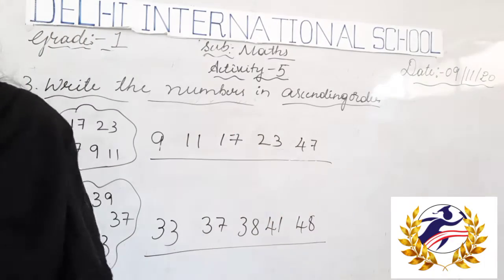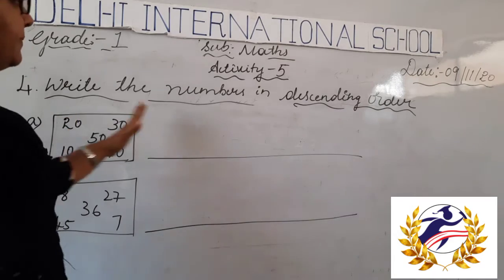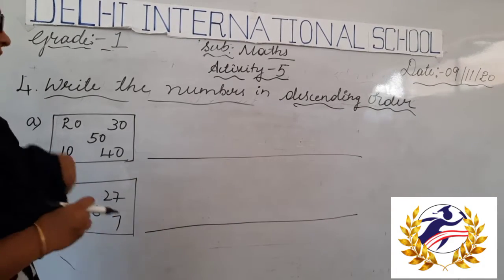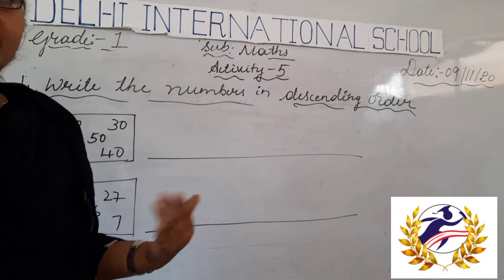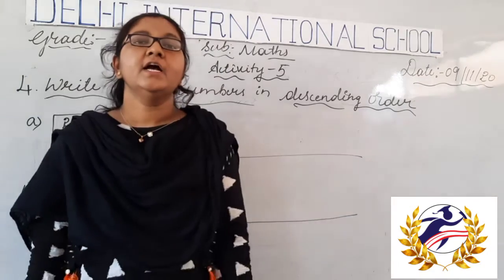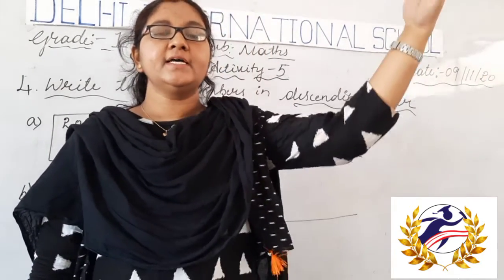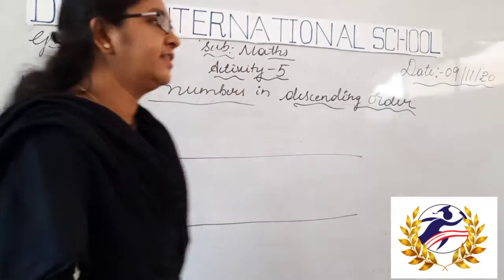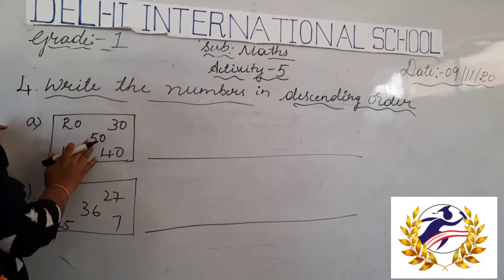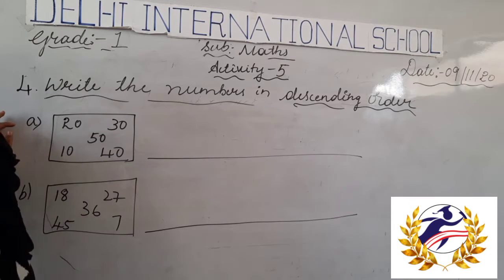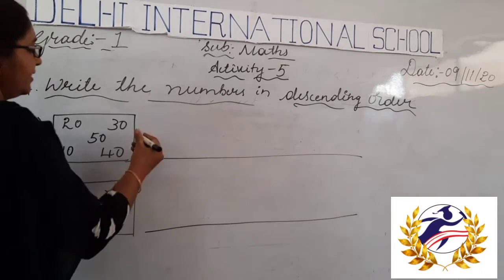Next, we will move to descending order. We have some numbers in a box and we will arrange them in descending order. What is descending order? Arranging the numbers from bigger to smaller. The given numbers are 20, 50, 30, 40, and 10. Let us write the greatest number first. That is 50.